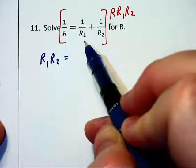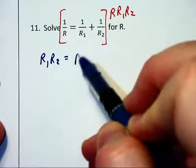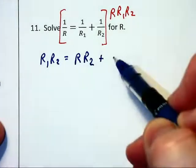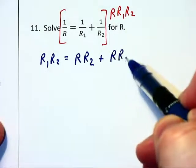In the middle on the right hand side the R1 cancels leaving R, R2. And then on the far right the R2's cancel leaving R, R1.